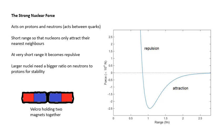So short range so that nucleons only attract their nearest neighbors. We actually know that because we know that all of the nuclei have the same density. At very short range, it becomes repulsive. Now, larger nuclei need a bigger ratio of neutrons to protons. If you look at the nucleon number of very, very big nuclei, big atoms, you'll see that you need more and more and more superglue to hold them together because there's so many protons repelling each other.